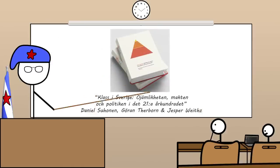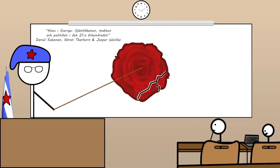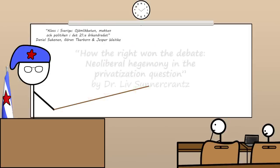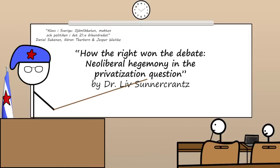I recently read a book called "Klass i Sverige" (Class in Sweden), about the widening class differences in Sweden and the defeat of social democratic values in favor of neoliberalism, where everything is thought of in terms of money, capital, and the health of the economy. One chapter in particular — "How the Right Won the Debate: Neoliberal Hegemony in the Privatization Question" by Dr. Liv Söner-Krantz — is especially interesting and relevant to the idea of the Overton Window, because it talks about how arguments and ideas that used to be marginal or fringe eventually became hegemony.